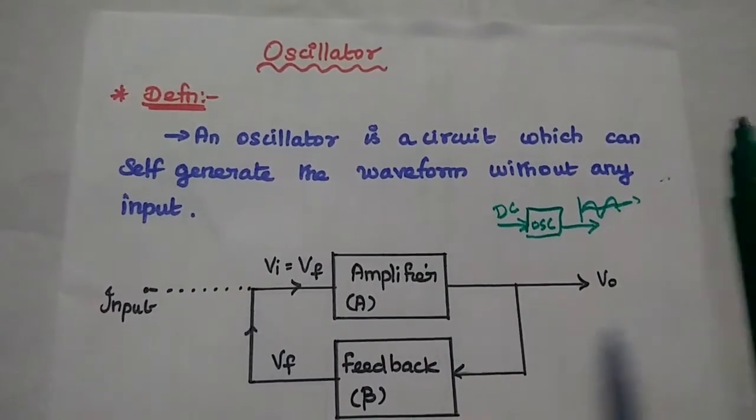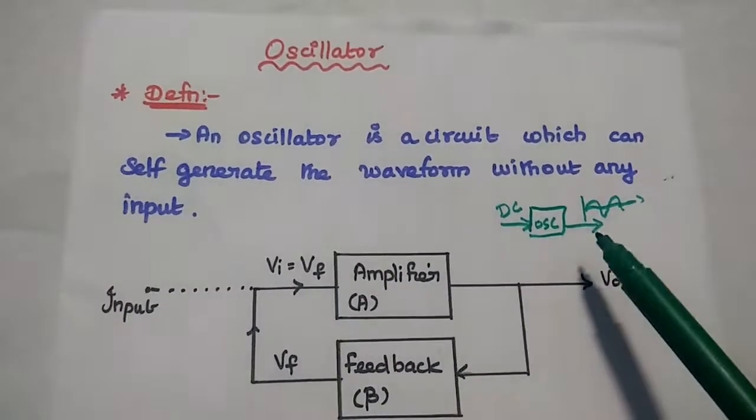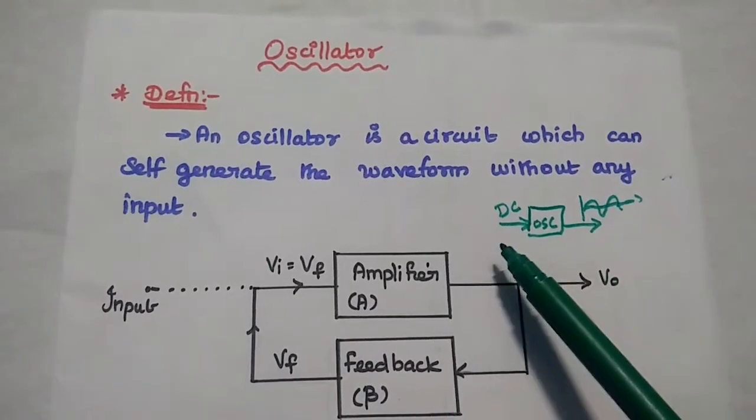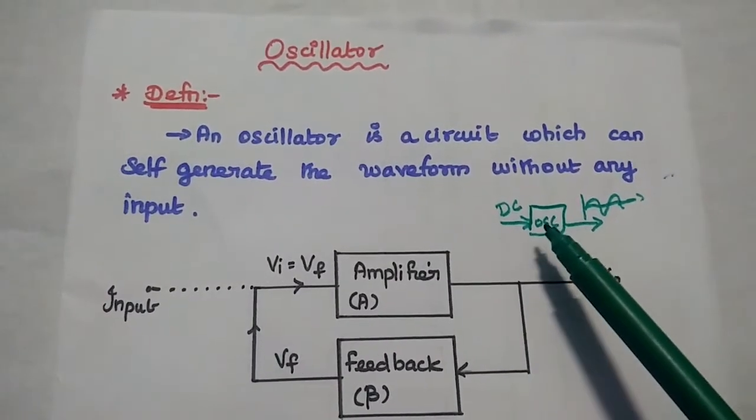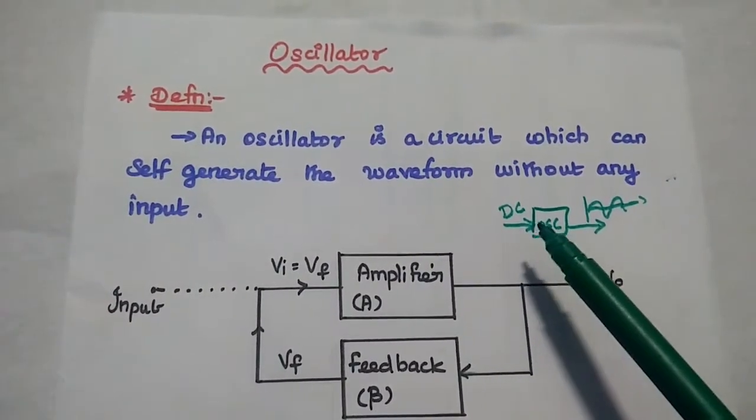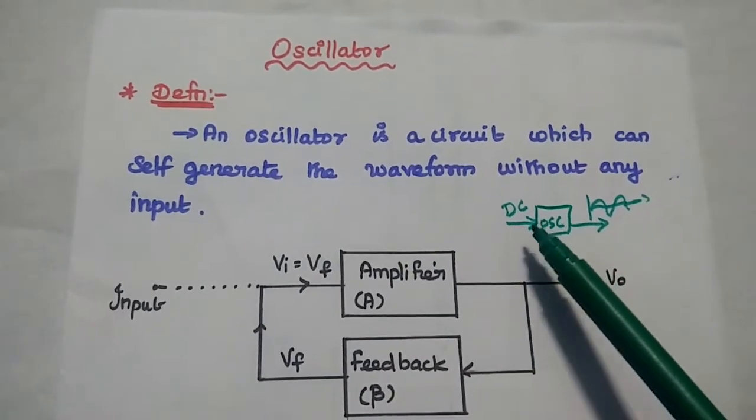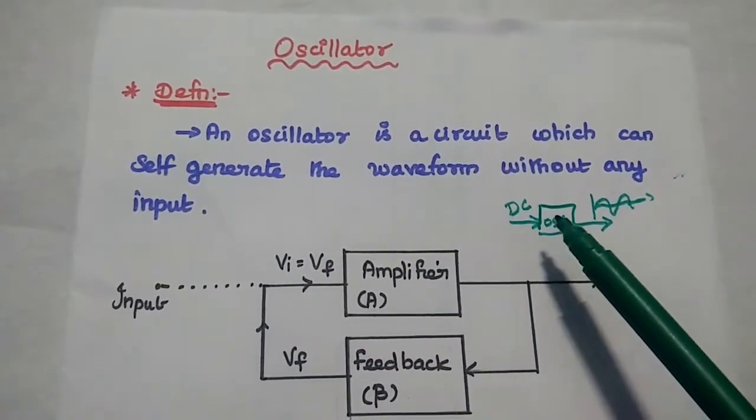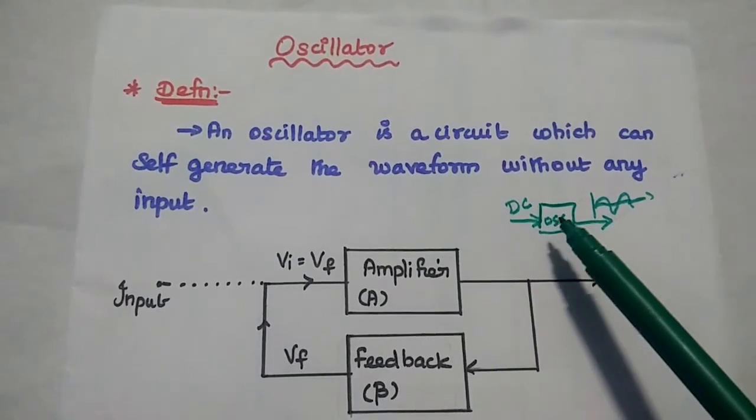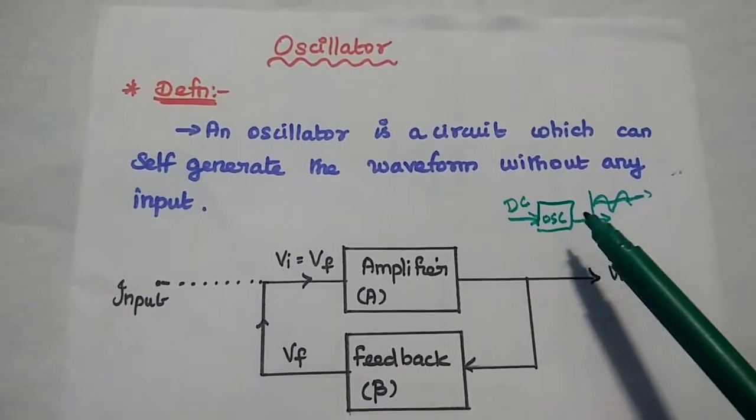So without any input means, consider this is the oscillator device. We are not going to give any input. We are going to simply give the DC supply voltage which is required for the operation of an active device used in this electronic circuit.